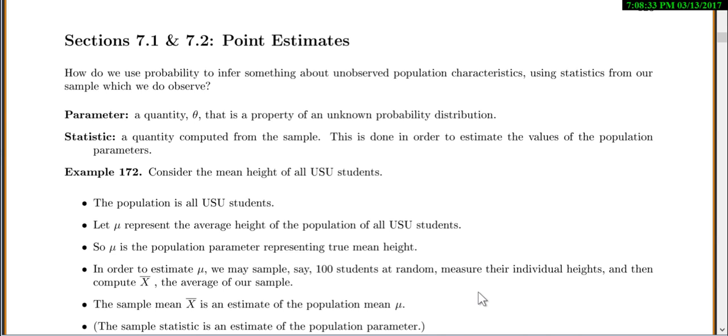So 7.1 and 7.2 are about what's called a point estimate, and it's how we use probability to estimate something in our population. We use our sample statistics to estimate our population. Let's make a note of that because that's important. We want to use sample statistics to estimate population parameters.